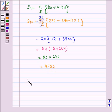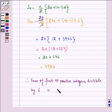Therefore, the sum of first 40 positive integers divisible by 6 is equal to 4920, which is our required answer.